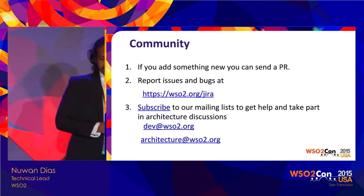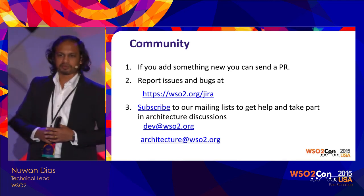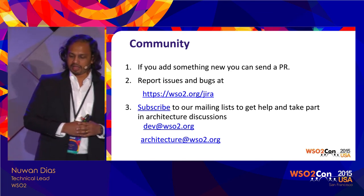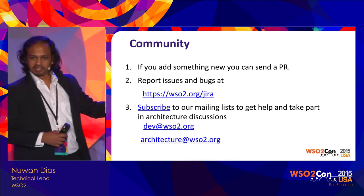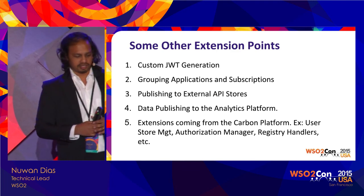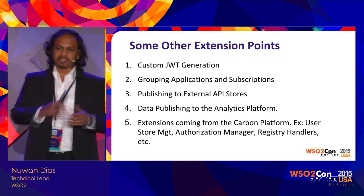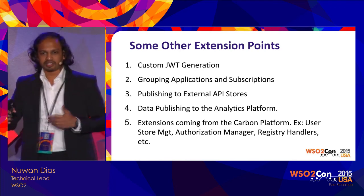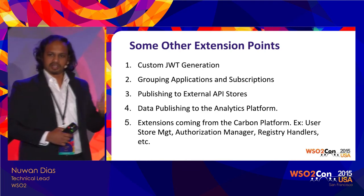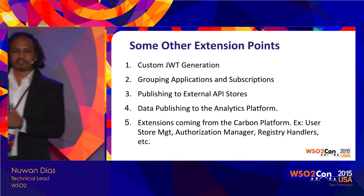In terms of community, we have a Jira and we've seen customers sending pull requests for bug fixes and in certain cases for features as well — we really encourage the community to do that. You can subscribe to two mailing lists and follow discussions on API Manager and other platform aspects. I've only covered a portion of the extension points. My main objective was to give you an idea of how we think about features and design and architect them. There are many other extension points — for example, if you're familiar with JWT, you could customize JWT token generation.